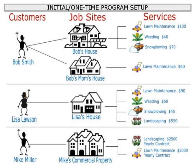The first order of business when beginning to use Groundskeeper Pro is to enter all of your customers' information, such as billing addresses, job site addresses, services, and service prices. This is the initial software setup and only needs to be performed once. This is the most time-consuming process of getting started, but once the information is entered, you may begin using the software to its full extent.